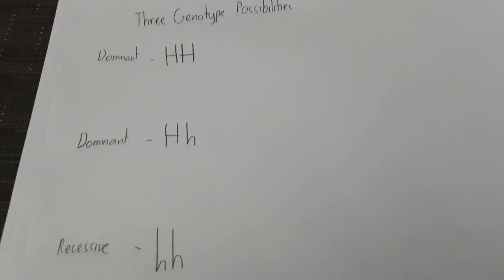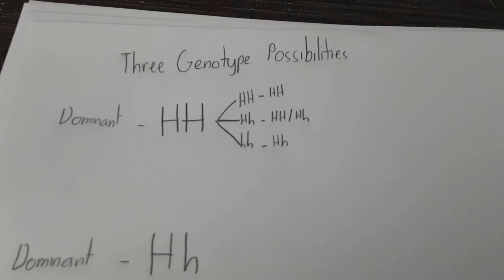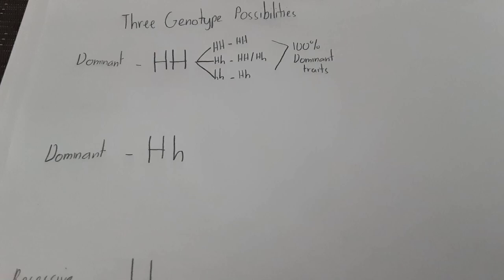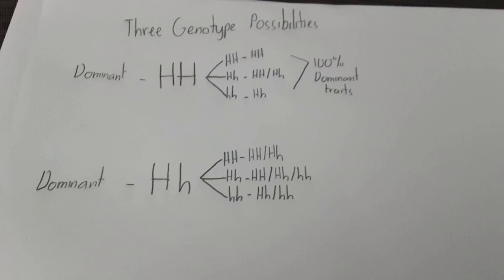The big H, the things with two big H are dominant and the one with no big H is not. So if you compare them or match them with other ones, you can see that there's 100% dominant traits because all of them have H.